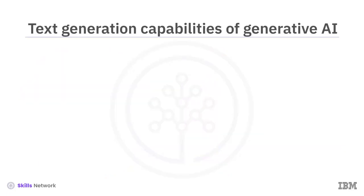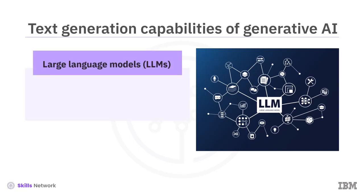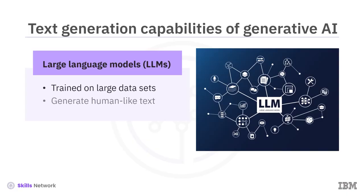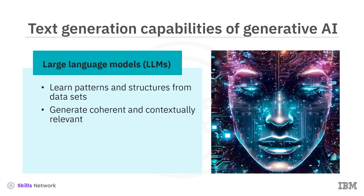At the core of generative AI's text generation capability are advanced AI-powered large language models, or LLMs. LLMs are trained on large datasets and can generate human-like text in various contexts. These models learn patterns and structures within the data to generate coherent and contextually relevant responses. These models generate text, converse, and provide explanations, summaries, and more.